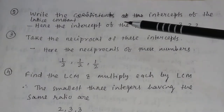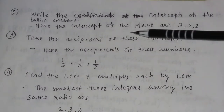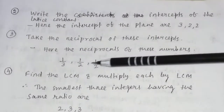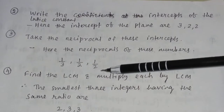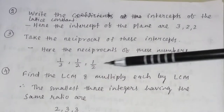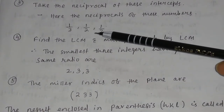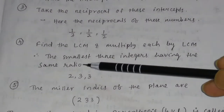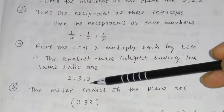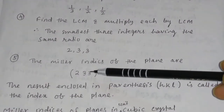Now write the intercepts of the lattice constants or basis vectors. Here, the intercepts of the plane are 3, 2, 2. Then, take the reciprocal of these intercepts — the reciprocals will be 1/3, 1/2, and 1/2. Now find the LCM and multiply each by it. The LCM of 3, 2, 2 is equal to 6. Multiplying gives the smallest three integers having the same ratio: 2, 3, 3. So the Miller indices of the plane are (2 3 3).